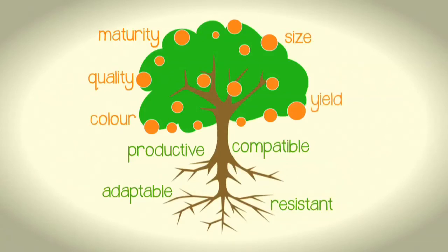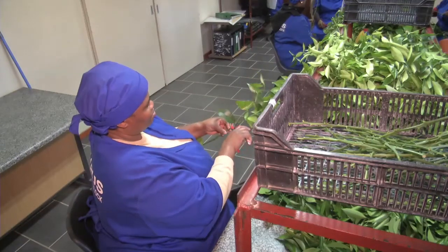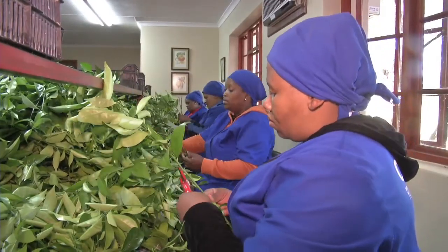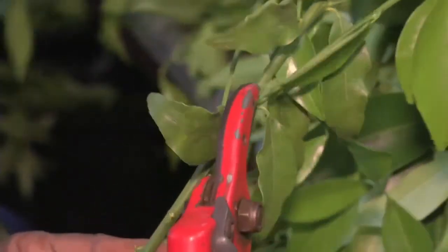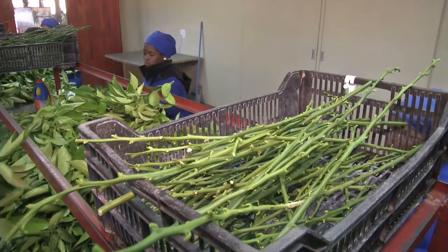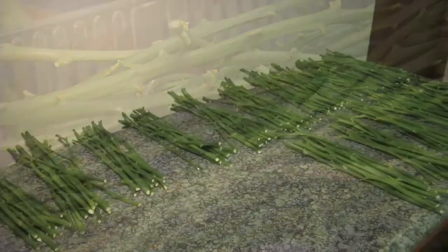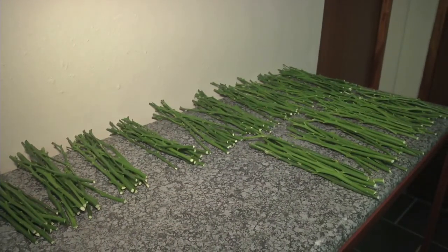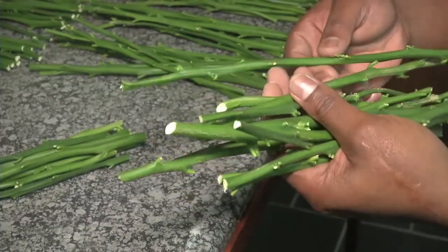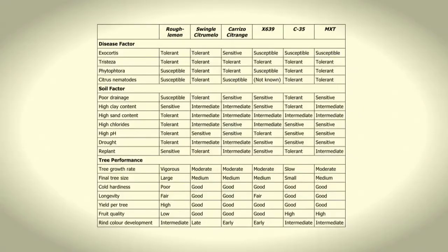This may seem like a tall order, but the right rootstock can achieve all of this. In summary, rootstock selection serves two purposes: minimizing the effect of limitations at the site — such as soil type, quality of irrigation water, and disease presence — and secondly, enhancing the yield, fruit size, and fruit quality. This table summarizes the characteristics of commonly used rootstocks. Take a careful look at the table and note the amount of research that has been done and the information available to show what rootstocks work best, under what circumstances, and how it impacts on tree performance.